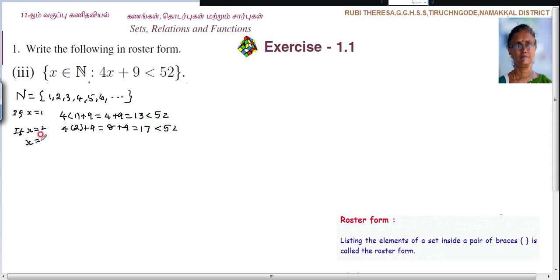Next x equal to 3. So 4 into 3 plus 9. 4 3's are 12 plus 9, that is equal to 21, less than 52. Next x equal to 4. 4 into 4 plus 9. 4 4's are 20. 20 plus 9 which is less than 52.